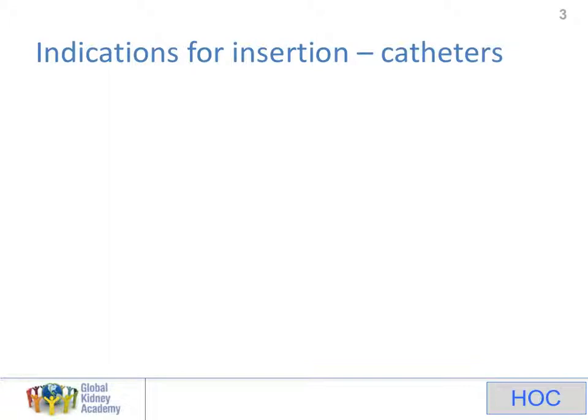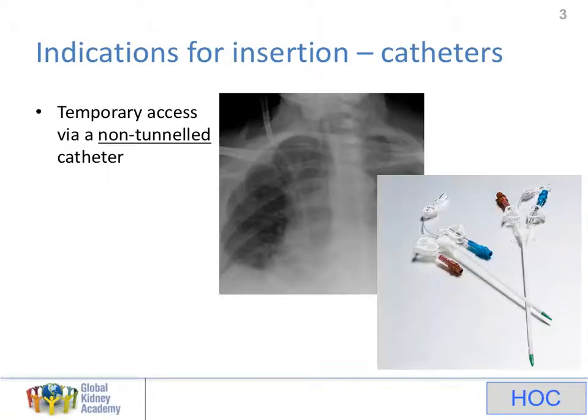Looking at the indications for a catheter, I'll start by explaining the different types of catheter that can be inserted and what we're going to cover in this talk. This talk is specifically about insertion of temporary catheters — shown on the right-hand side of the screen are two temporary catheters. These have a central extra lumen, but these are catheters which go straight into the vein, so the distance from the skin exit site to the bloodstream is only two to three centimetres. The X-ray shows the appearance of a right internal jugular catheter.